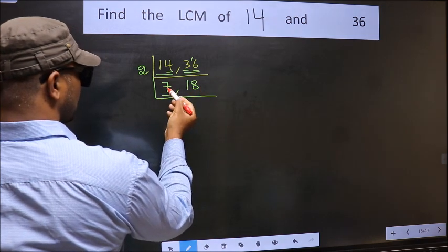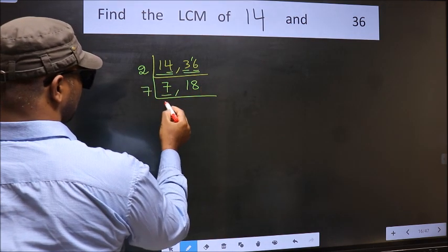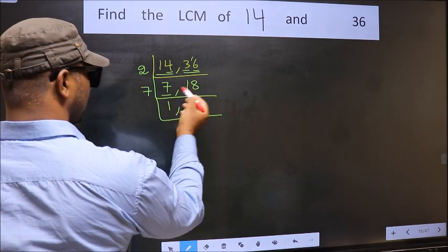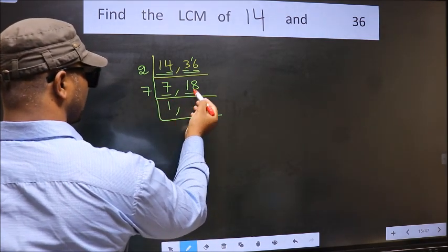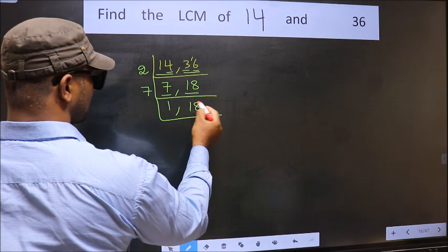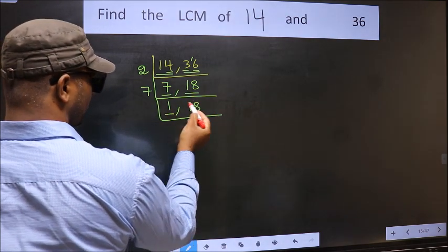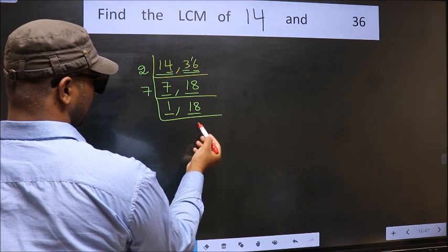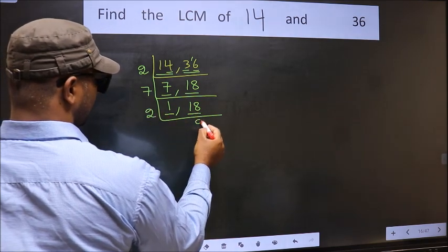Now here we have 7. 7 is a prime number, so 7 times 1 is 7. The other number is 18 — not divisible by 7, so we write it down as it is. We got 1 here, so focus on the other number 18. 18 is 2 times 9.